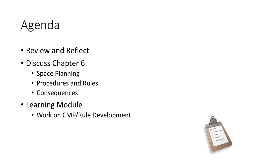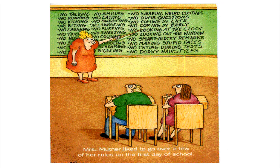It's important to contextualize this thinking — to think about the theoretical underpinnings for the decisions that we make — and then get to the actual rules. In this chapter we're going to think about planning the different spaces and places in our classroom, procedures and rules, consequences, and all of this should help us develop a classroom management plan and the rules that will guide our classroom and support our learners.